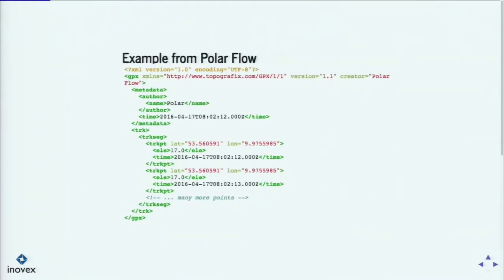For this presentation, I will use not the customer data, but data I took from my watch — from Polar Flow. This contains only a track, because if you go for a run, you normally don't plan the route. You just go for a run, and it tracks your points. We have here the latitude, the longitude, the elevation, and of course the time when the measurement was taken.